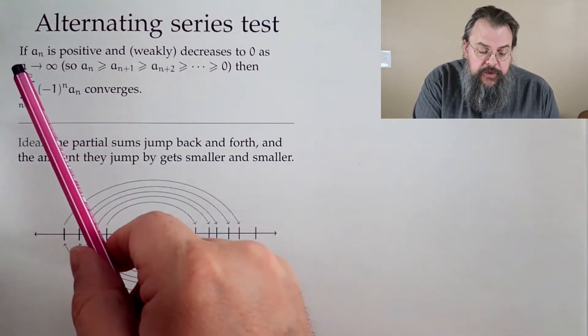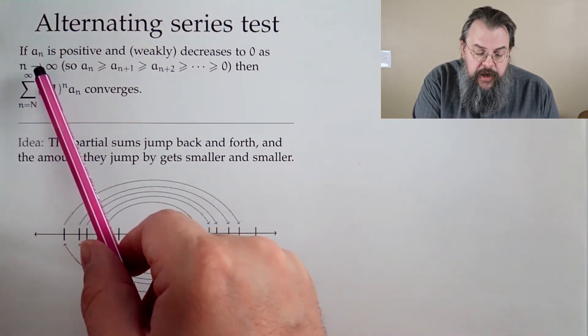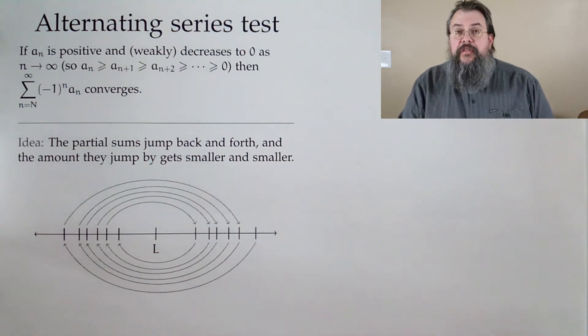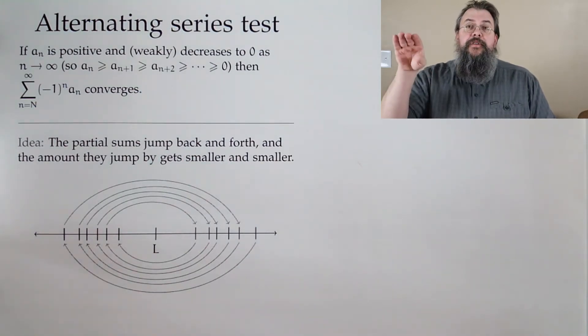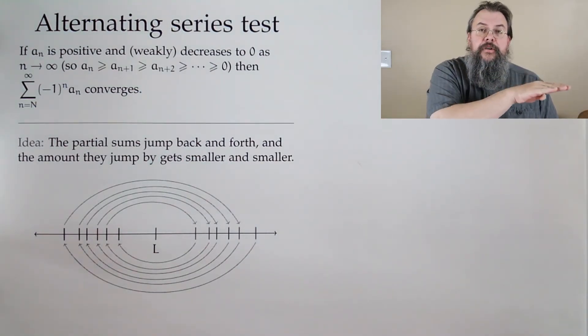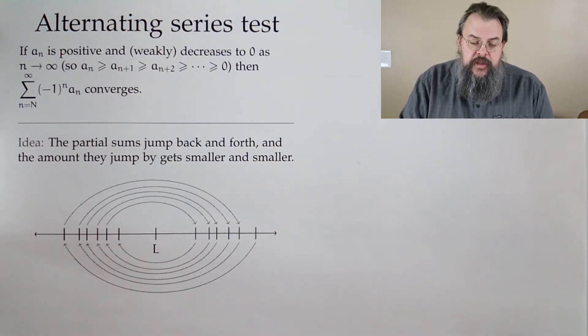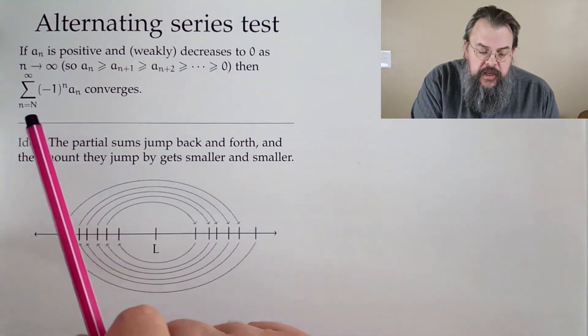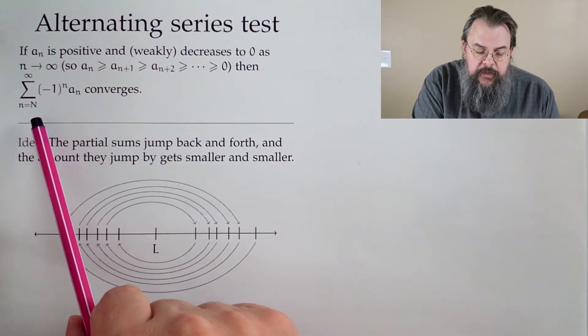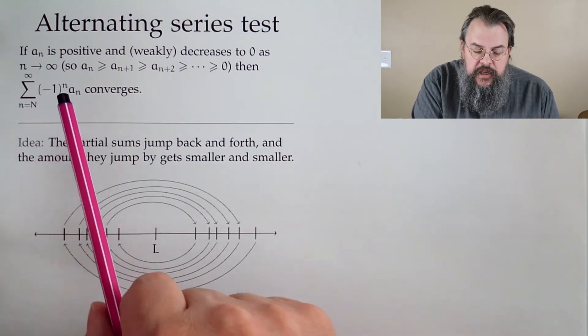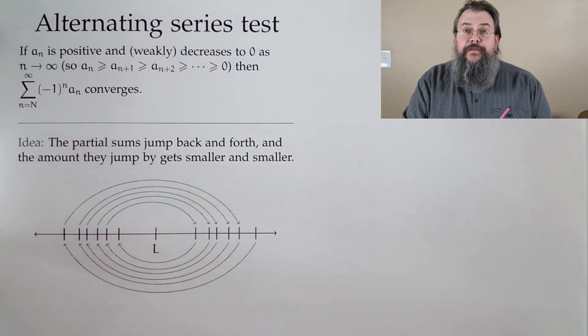Suppose we have some terms where the a_n is positive, and they decrease to zero. Then, the conclusion is that when we add up the sum of (-1)^n a_n, that converges.